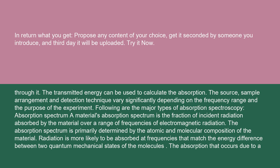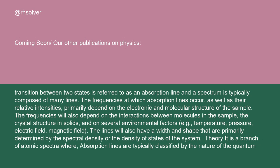Following are the major types of absorption spectroscopy. A material's absorption spectrum is the fraction of incident radiation absorbed by the material over a range of frequencies of electromagnetic radiation. The absorption spectrum is primarily determined by the atomic and molecular composition of the material. Radiation is more likely to be absorbed at frequencies that match the energy difference between two quantum mechanical states of the molecules. The absorption that occurs due to a transition between two states is referred to as an absorption line, and a spectrum is typically composed of many lines.